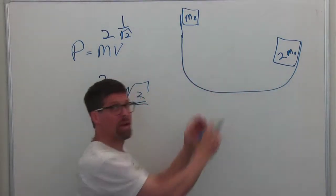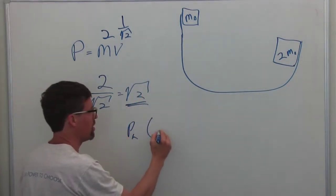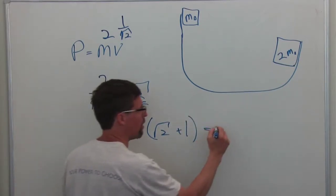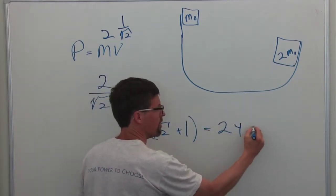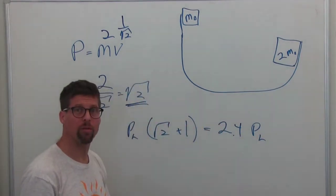And when you add the momentum together, you get the momentum of the left times square root of 2 plus 1 is equal to about 2.4 times the momentum on the left because the square root of 2 is about 1.4.